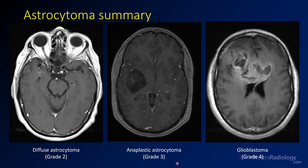To summarize the astrocytomas — all on contrast-enhanced images: the grade 2 astrocytoma at the left temporal lobe is barely visible, maybe with a small cystic space. The grade 3 is a little larger with a little more enhancement and mass effect. The grade 4 shows intense enhancement, extensive mass effect, and hemorrhage as we saw in our case.